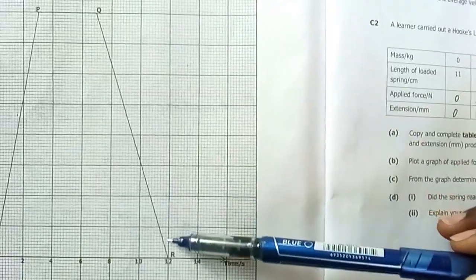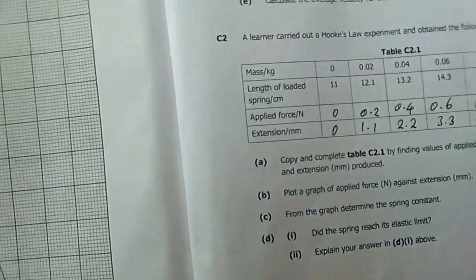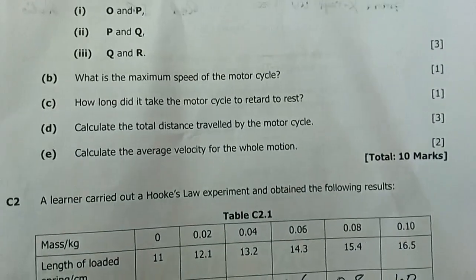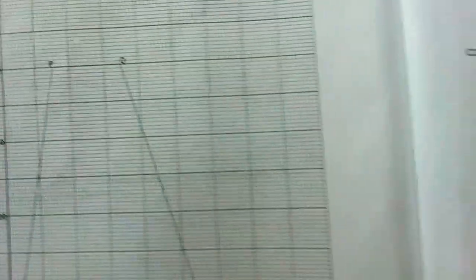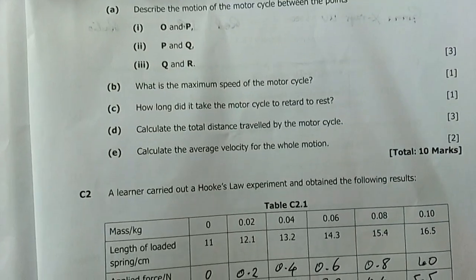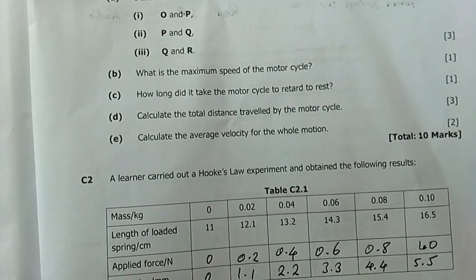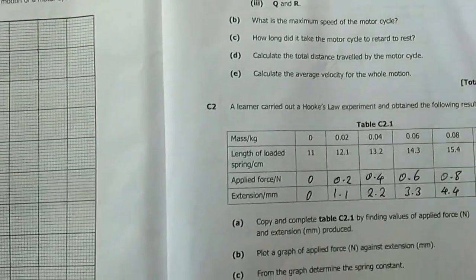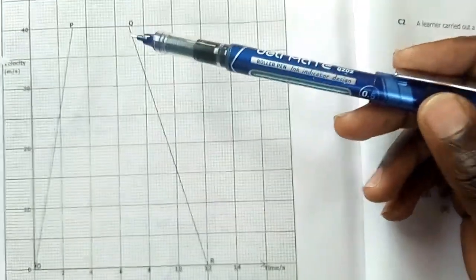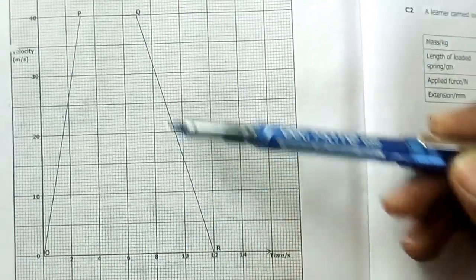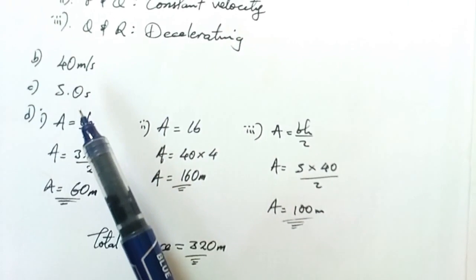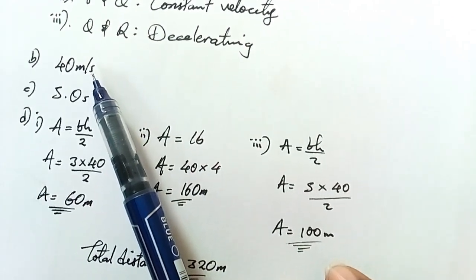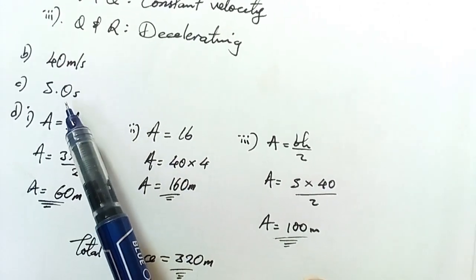Next question: what was the maximum speed of the motorcycle? The maximum speed of the motorcycle was 40 meters per second. How long did it take the motorcycle to retard to rest? Retardation began at this point here and ended here, so you have to drop down from here and see what time it is, then you simply measure your time. From my answers, the answer for C was five seconds. Maximum velocity 40 meters per second, the time of deceleration was five seconds.